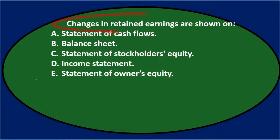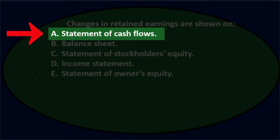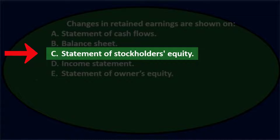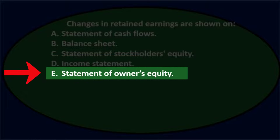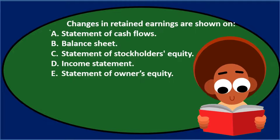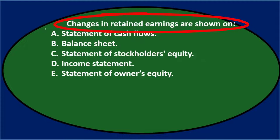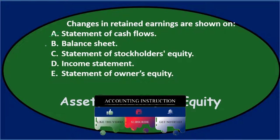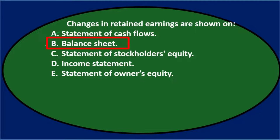Next question: Changes in retained earnings are shown on — A. statement of cash flows, B. balance sheet, C. statement of stockholders' equity, D. income statement, E. statement of owner's equity. Going through this using the process of elimination: A — statement of cash flows — doesn't sound right, that's the cash flow statement. B — the balance sheet does have retained earnings on it, but the equity section is usually condensed and shows only the end result, not the change, so no.